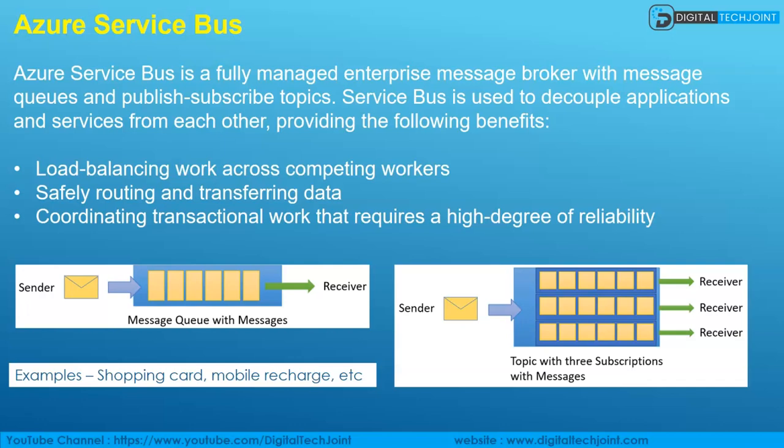For example, when you go to Amazon or Flipkart and place an order, you don't get confirmation instantly. When you place an order and complete payment, a message goes to the queue, which is read by publishers and subscribers who process it and send back the response. That's why, after a couple of minutes, you get a confirmation that your order has been placed and a delivery date — this is how backend systems work in a disconnected architecture.